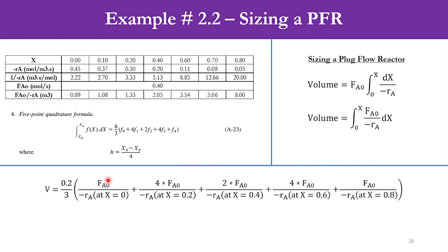We know the value of FA0 over minus RA at x = 0.8 is 0.89, four times FA0 over minus RA at x = 0.2 is 1.33, two times FA0 over minus RA at x = 0.4 is 2.05 times 2, four into 3.54, and finally 8, with H = 0.2. Accordingly, we get volume = 2165 cubic decimeters or 2.165 cubic meters.